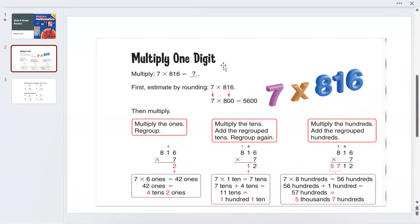To multiply one digit, first we need to estimate by rounding. So 7 times 816 is going to be 7 times 800, which equals 5,600. Then we need to multiply.